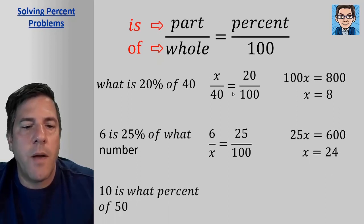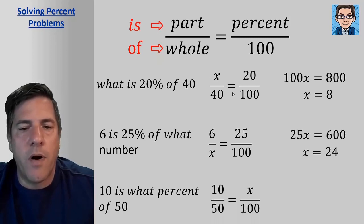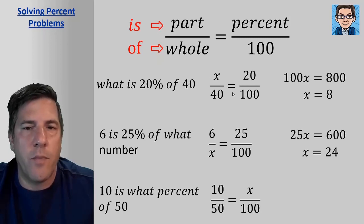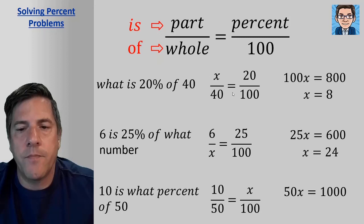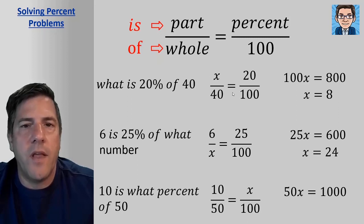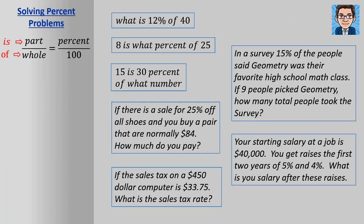And in the last problem, 10 is what percent of 50? So here we know the part and the whole. The part is 10. The whole is 50. What we don't know is the percent. So here we put the variable in for the percent. So x over 100. We cross multiply, and here we get 50x equals 1000. Divide by 50, and you get the percent equals 20%.